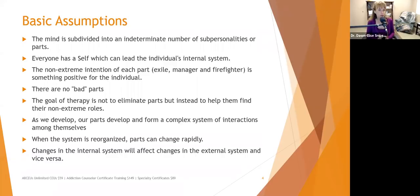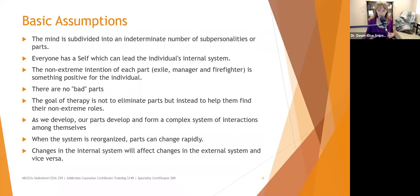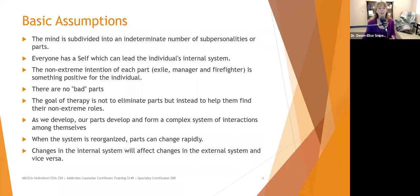Changes in the internal system — the way people think, feel, and react — will affect changes in the external system and vice versa. If I have an extreme firefighter engaging in addictive behaviors to extinguish painful feelings, that affects my external system. Likewise, something in my external system can trigger the firefighter to jump back to the fore. Our feelings, thoughts, interactions, and interpretations affect how we perceive and interact with the world, and the world affects our perceptions.